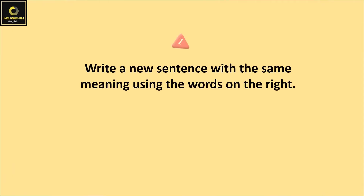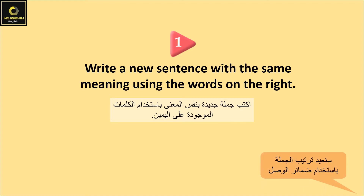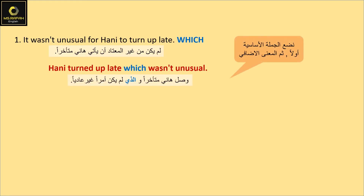Question 1. Write a new sentence with the same meaning using the words on the right. Example: 'It wasn't unusual for Honey to turn a blade.' We're going to use 'which'. Answer: 'Honey turned a blade, which wasn't unusual.'